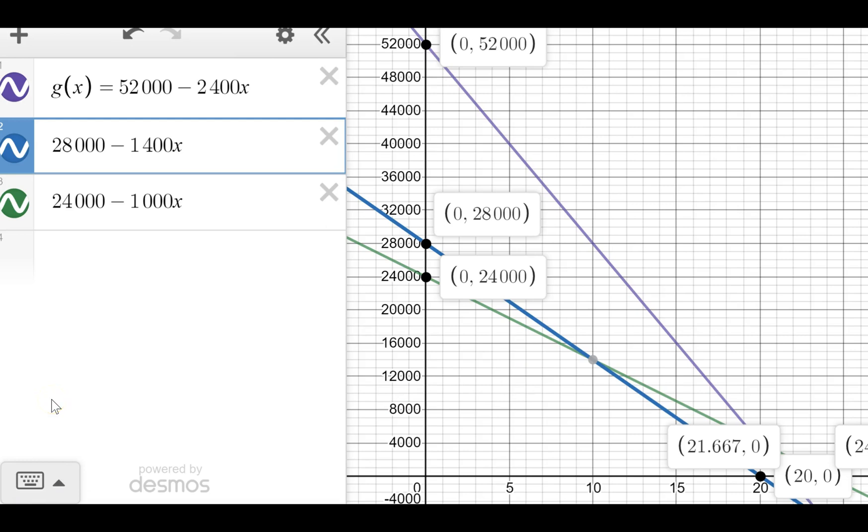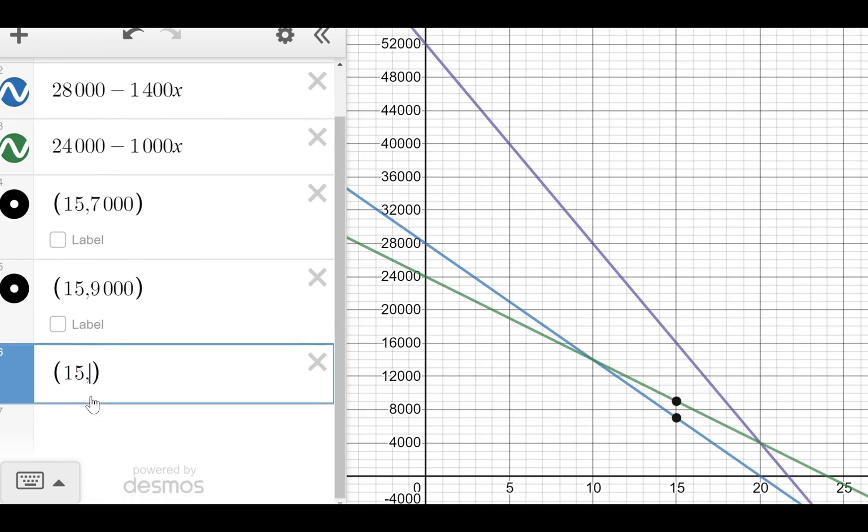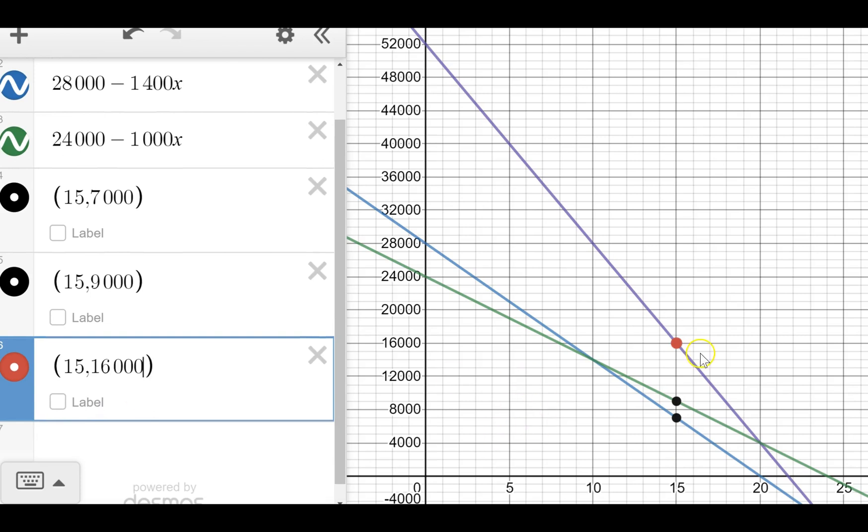Let me clear everything else out and give you another example. The point (15, 7000) is on Ally's graph and the point (15, 9000) is on Dane's graph. So 7,000 plus 9,000 is 16,000, which means the point (15, 16000) should be on the new graph, which we can see it is right there.